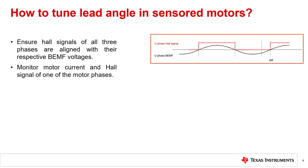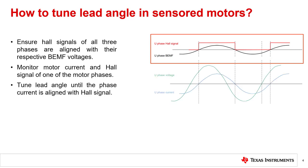We drive the motor and monitor motor phase current and hall signal of one of the motor phases. Lead angle is tuned such that the phase current is aligned with hall signal. At this lead angle, the motor will generate maximum torque and operate at maximum efficiency.